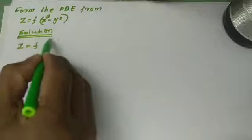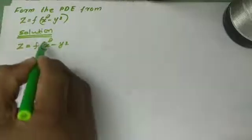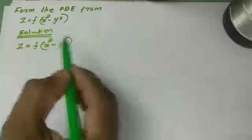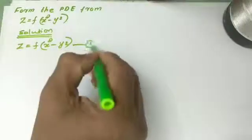Z equal to f of x square minus y square. This is Equation number 1.